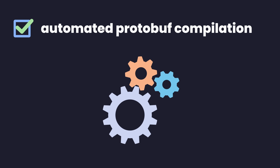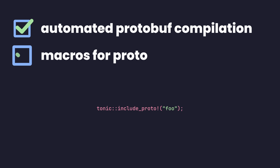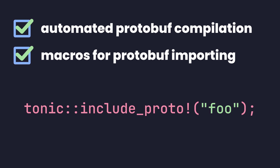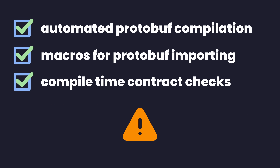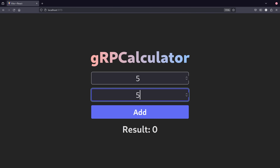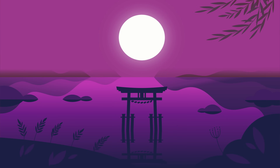Features such as automatic protobuf compilation whenever you build your code, simplified importing through macros, compile-time checking of your implementation as compared to your gRPC contract, and perhaps one of the greatest features I've seen in a gRPC implementation: web support with about three lines of code. To show all of these features in action, let's go ahead and build something with it.